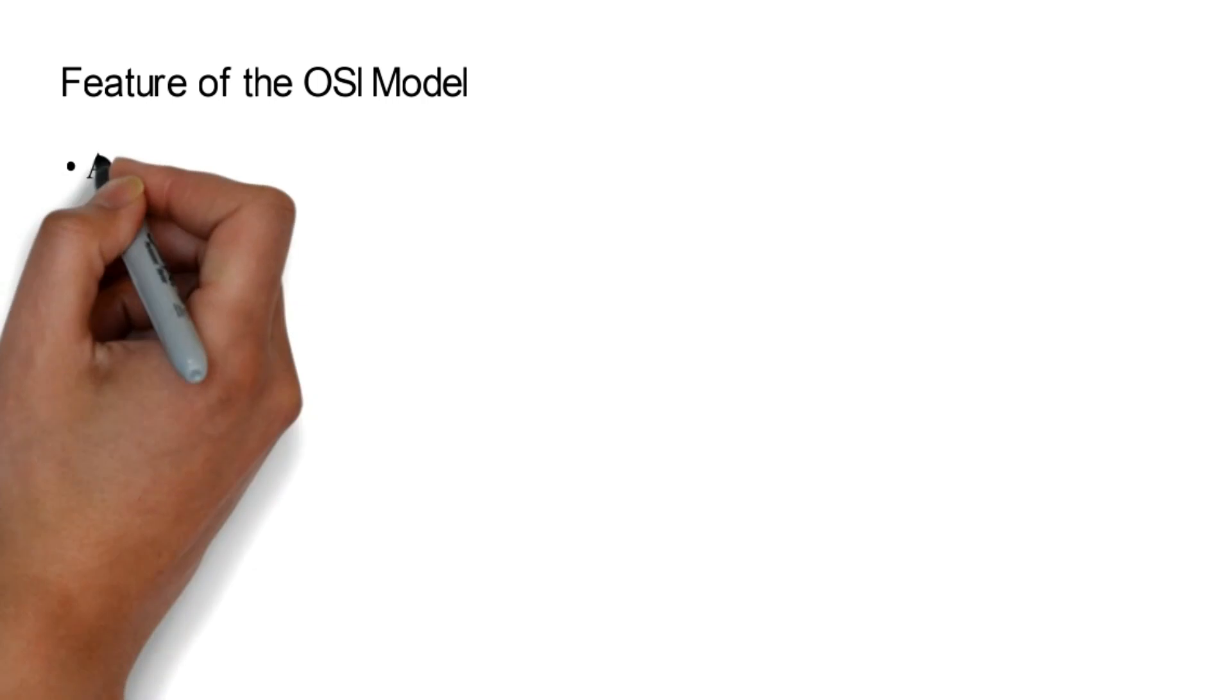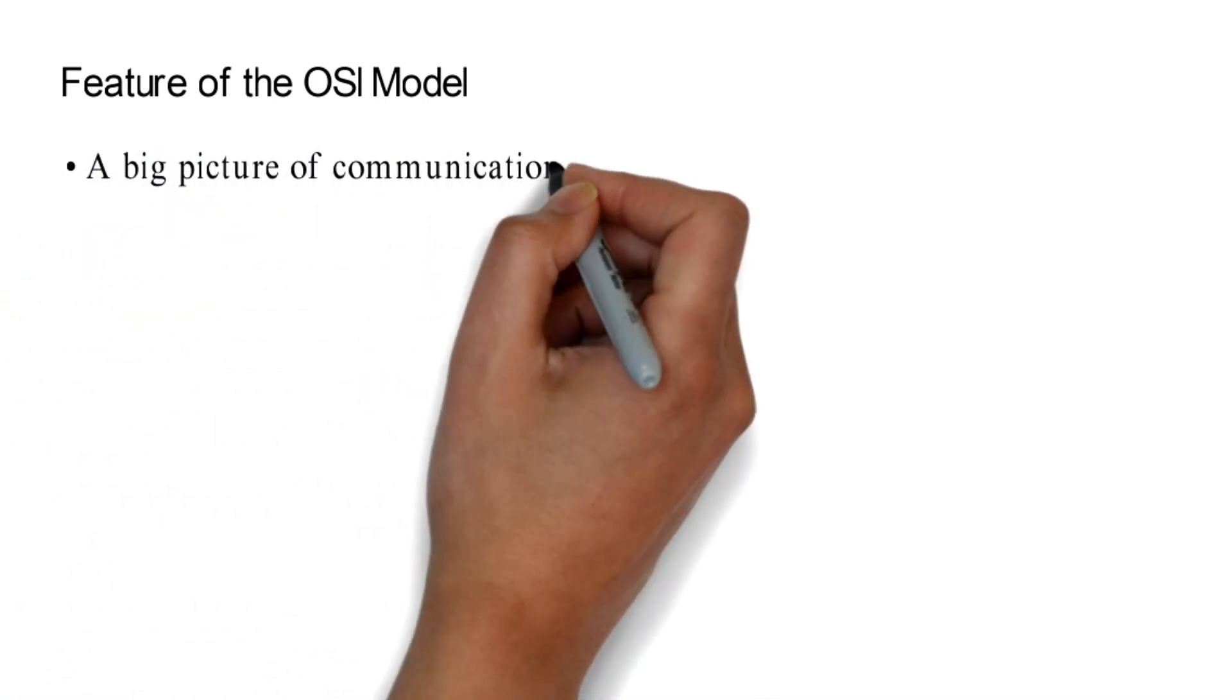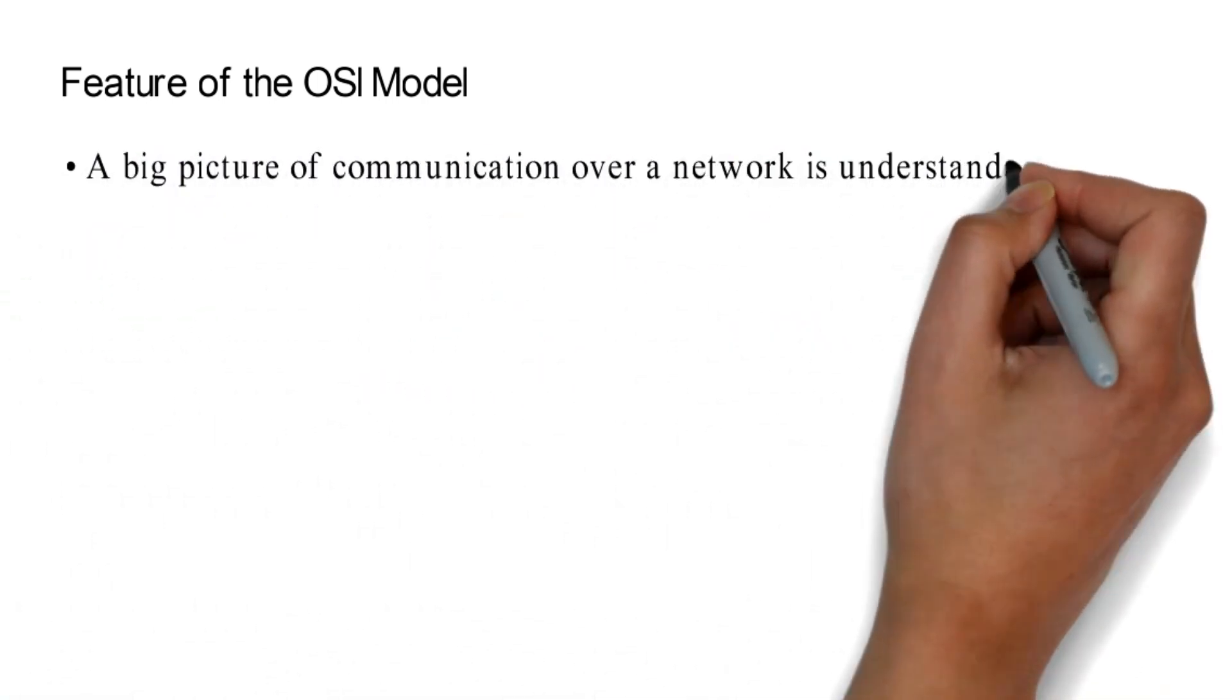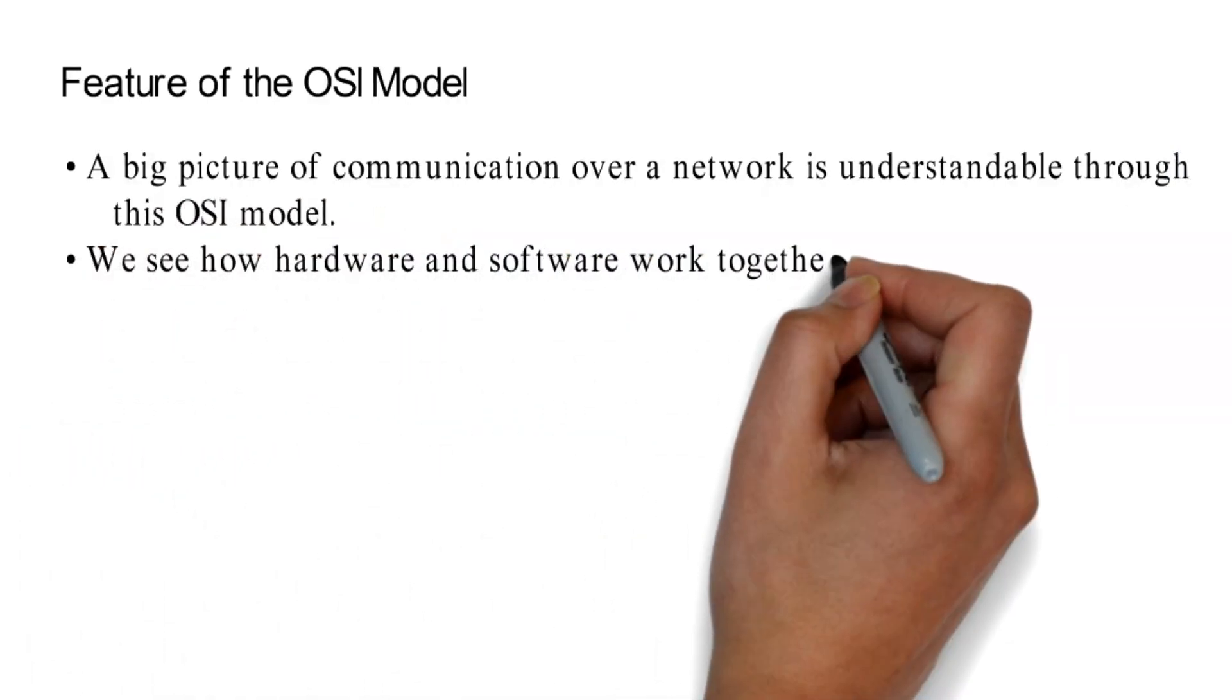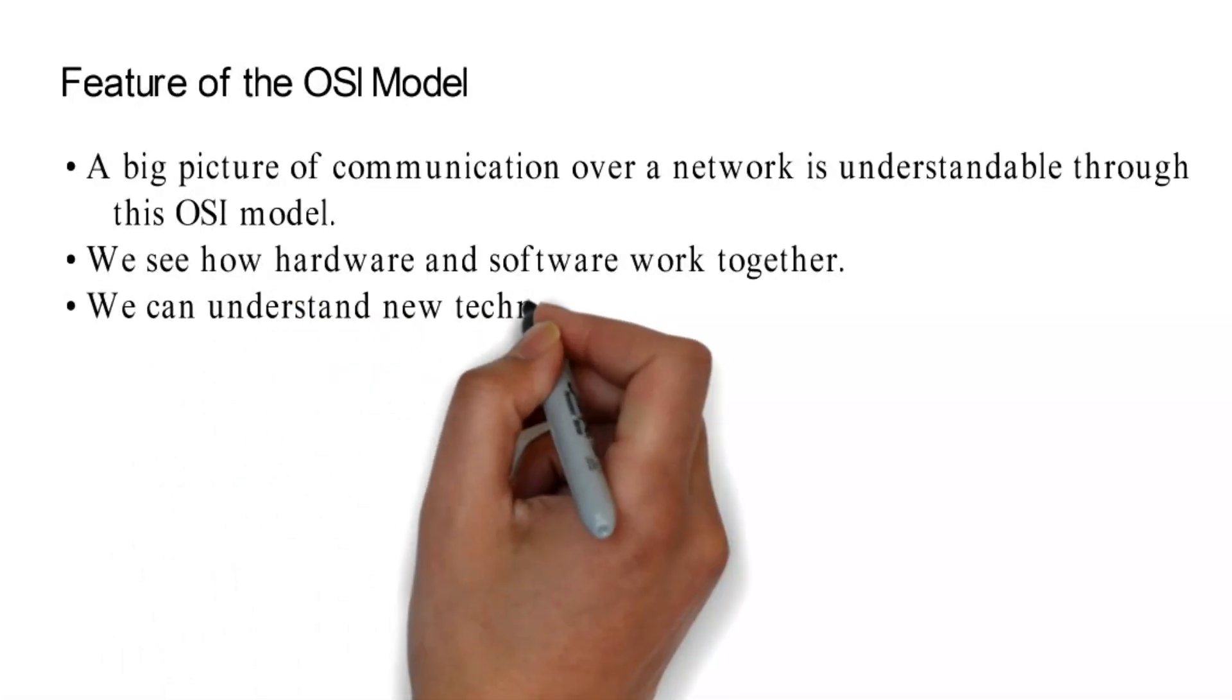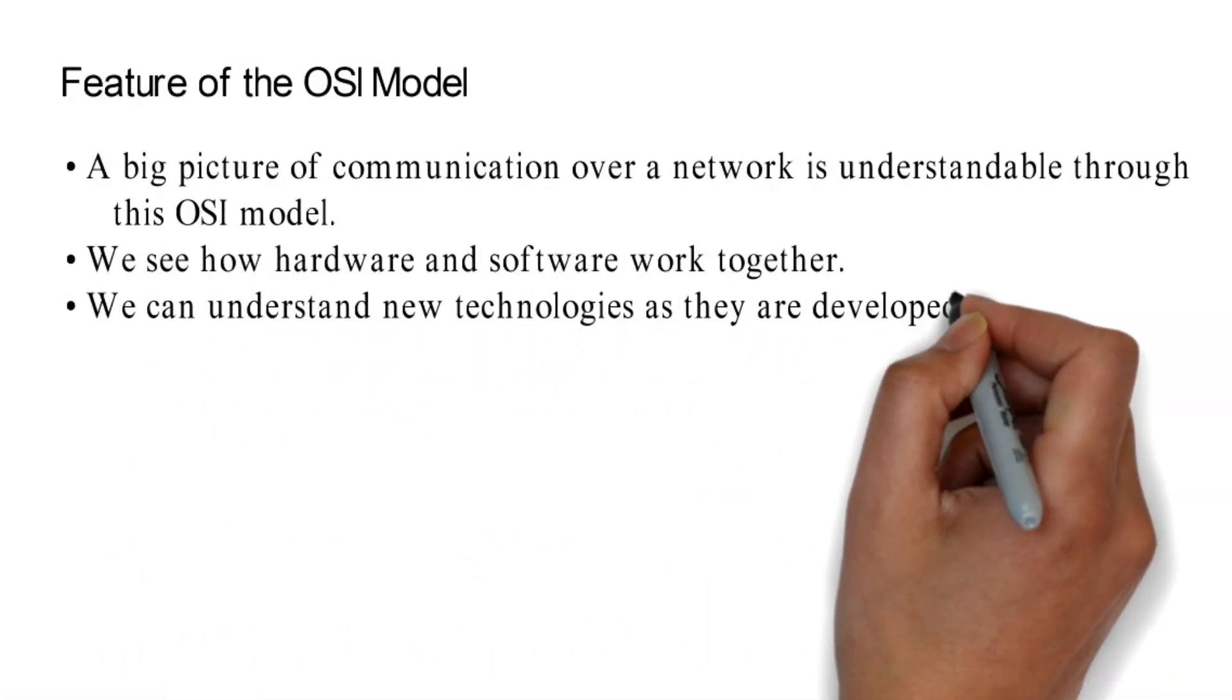Feature of the OSI Model: A big picture of communication over a network is understandable through this OSI model. We see how hardware and software work together. We can understand new technologies as they are developed.